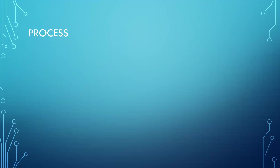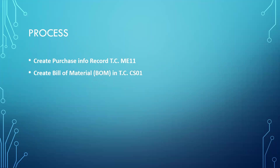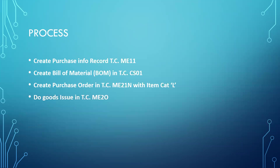They may ask you, what is the process? Apart from creation of the material master and vendor master — I have already uploaded many videos on those — we are going to create a subcontracting info record, create a Bill of Material (BOM) in CS01, and then create a purchase order in ME21N with the item category L. We also do goods issue to the vendor using transaction code ME2O.